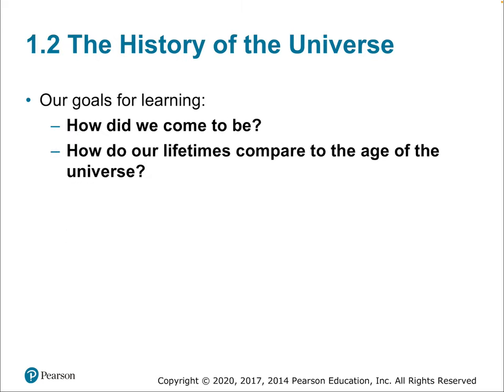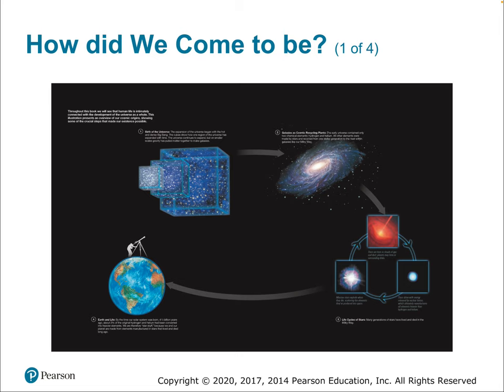Now on to section 1.2, the history of the universe. Our goals: how did we come to be, and how do our lifetimes compare to the age of the universe? The history went like this: a Big Bang created matter and energy; clumps of matter condensed forming galaxies; our own galaxy formed; within it, condensed gas formed a star; leftovers formed the solar system; and eventually our planet cooled into the life-giving world we live on.